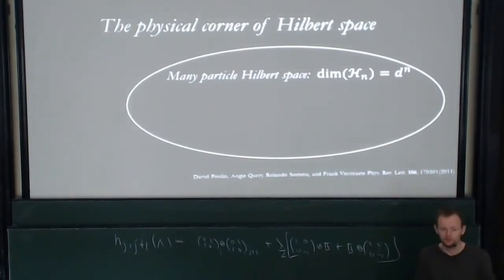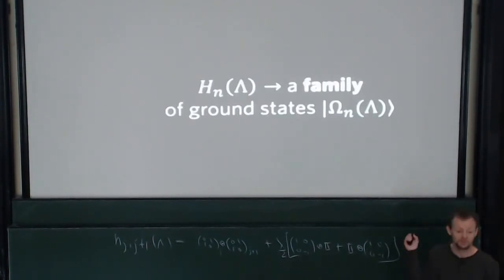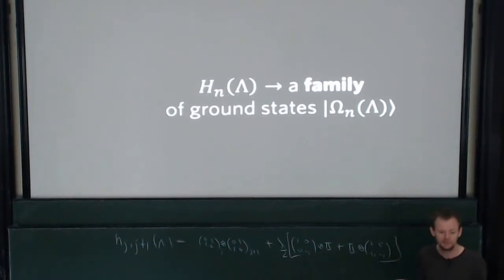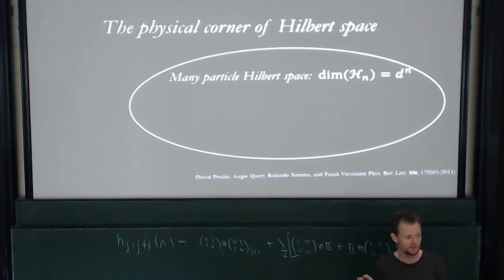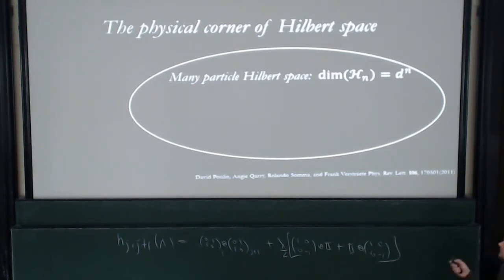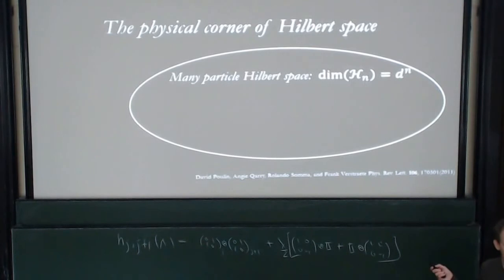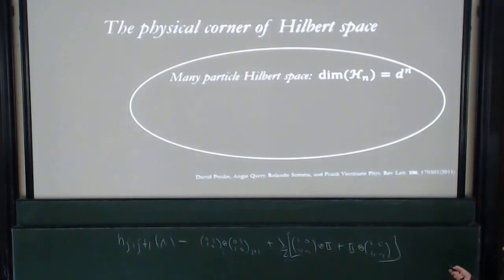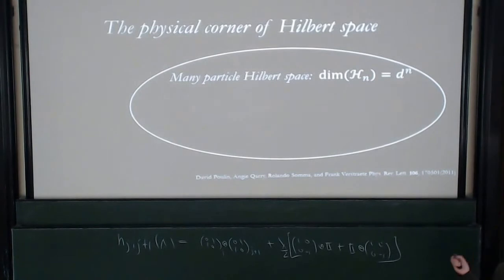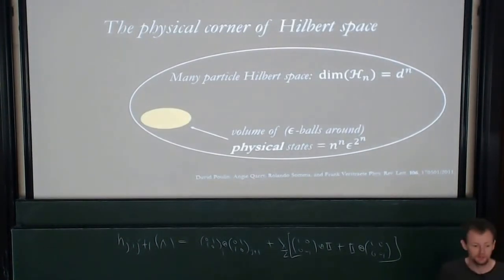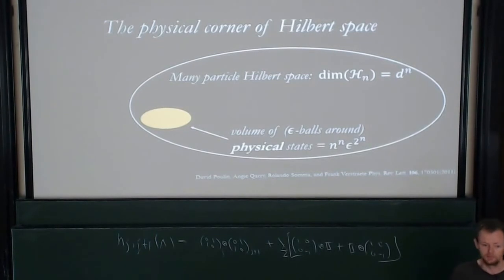It might have been the case that this was intractable — that just about any vector in Hilbert space could be realized as the ground state of a local Hamiltonian. Well, it's not actually. This is the first remarkable result giving us motivation to continue: it's a theorem telling us that ground states of these things are not generic. They occupy a very special tiny corner of Hilbert space. Many-particle Hilbert space has dimension d^n — when d is 2 and n is 32, that's the wall. But the volume of physical states — those that can be prepared on quantum computers or appear as ground states of local Hamiltonians — is a tiny fraction of this vast Hilbert space.